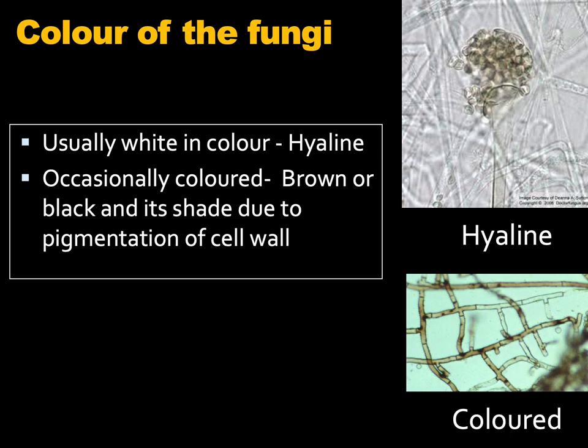There are different colors of fungi. Usually they are white in color, and in mycology this is called hyaline. Occasionally fungi are colored — they may be brown or black — and this is due to the pigmentation of the cell wall.